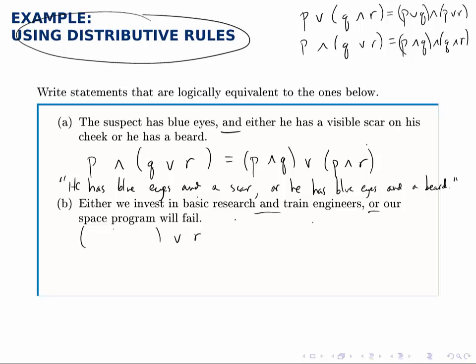So in the EITHER part, we put: we invest in basic research, call that P, and we train engineers, Q.